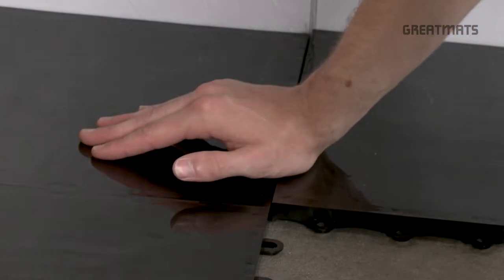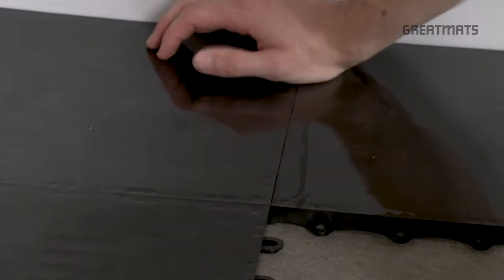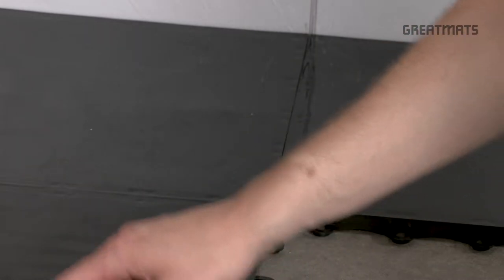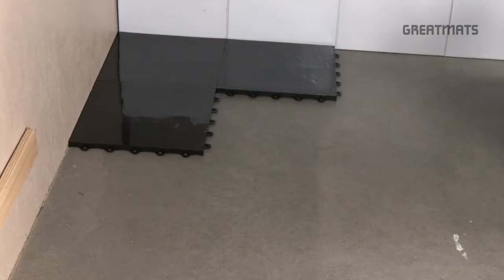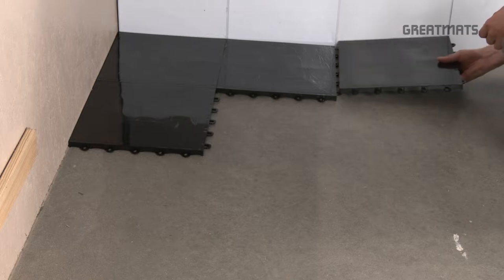When you're installing the tabs into the loops, use some downward pressure to install the tile and then it will become flush with all the other tiles. Work out evenly in both directions until you have laid out all of your tiles.